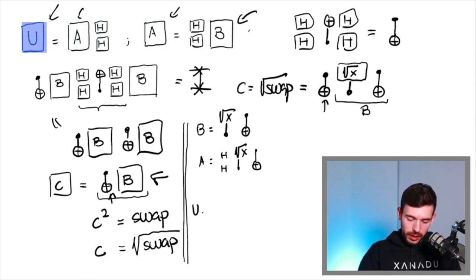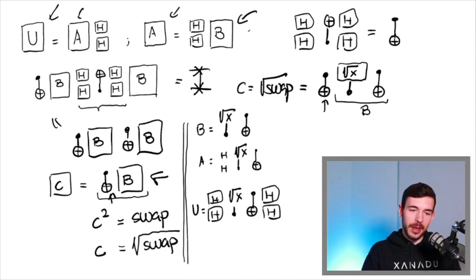So then if we have B and A, we can get U. So U is equal to Hadamard, Hadamard, control square root of X, CNOT, Hadamard, Hadamard. This is our final expression of U.